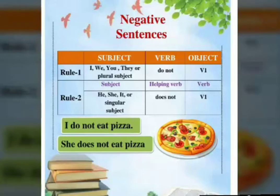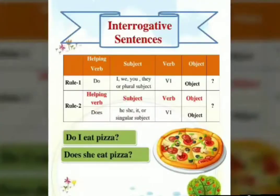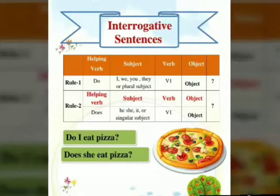Now we will move towards interrogative sentences. We will bring the helping verb at the start. Do — we will use with I, we, you, they, or with a plural noun, then first form of verb, then object, then question mark. For example: Do I eat pizza? And does — we will use with he, she, it, or with any singular subject, then first form of verb, then object, then question mark. For example: Does she eat pizza? In interrogative sentences, we will write the helping verb at the start and don't forget to put a question mark at the last.